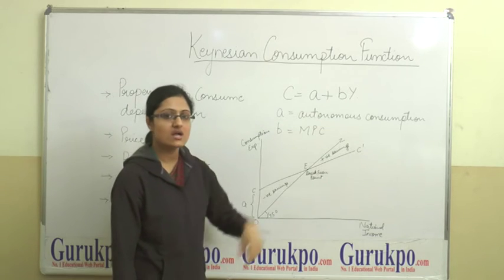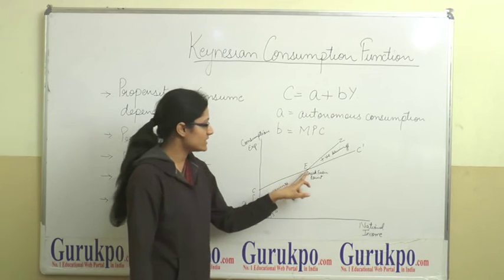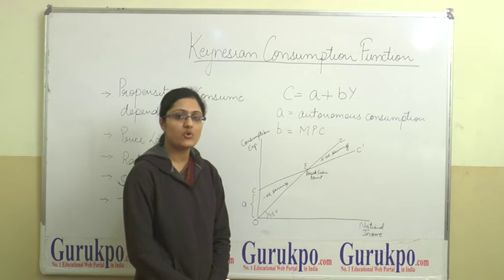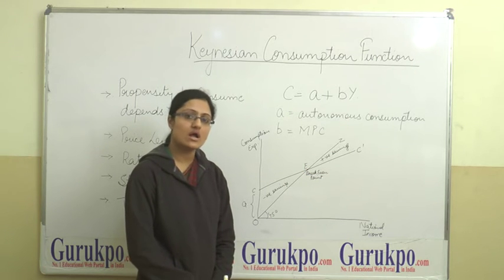Now point E is the break even point because at this point the income level is equal to consumption.